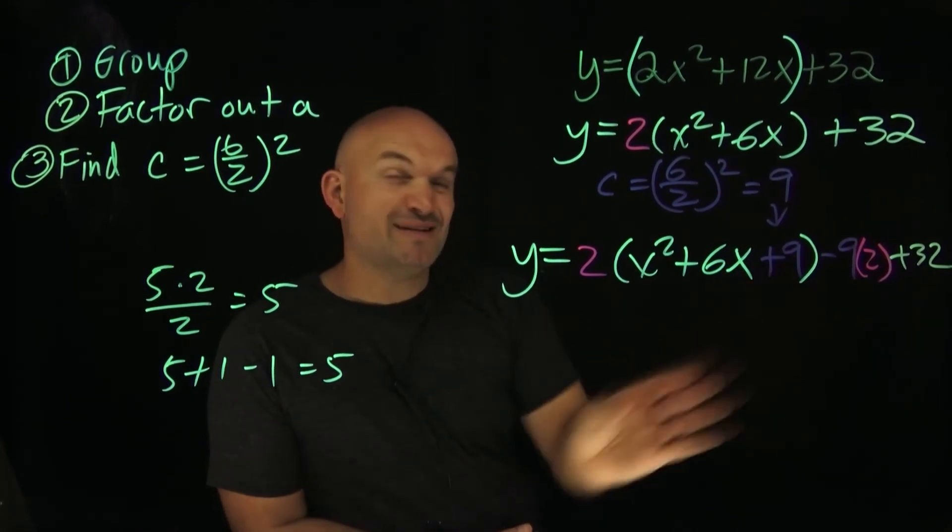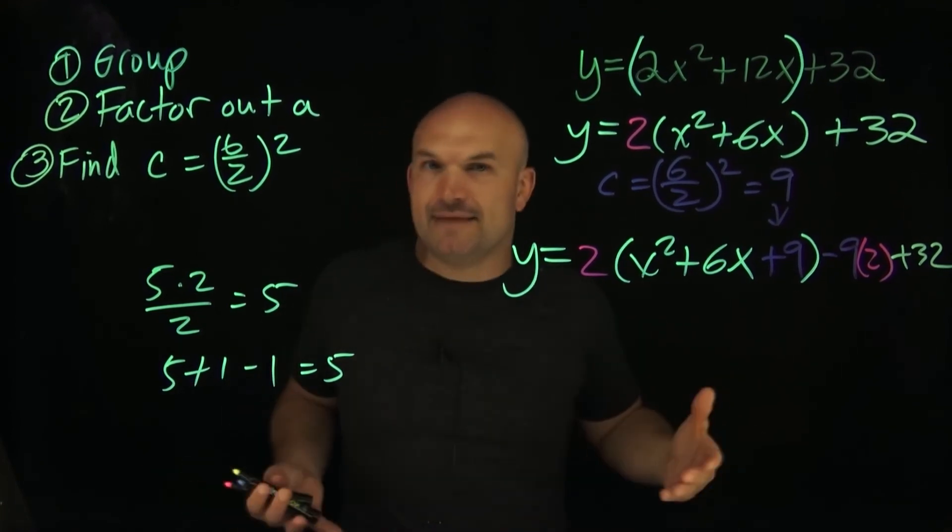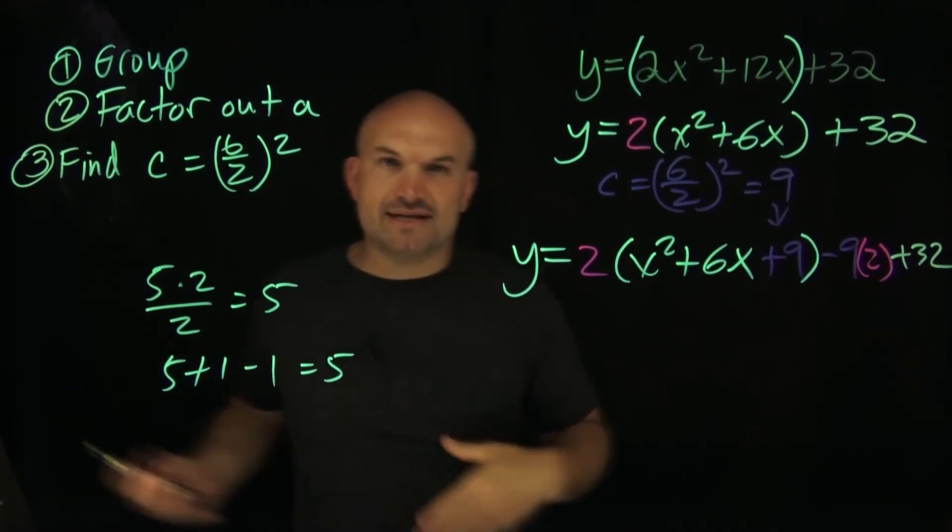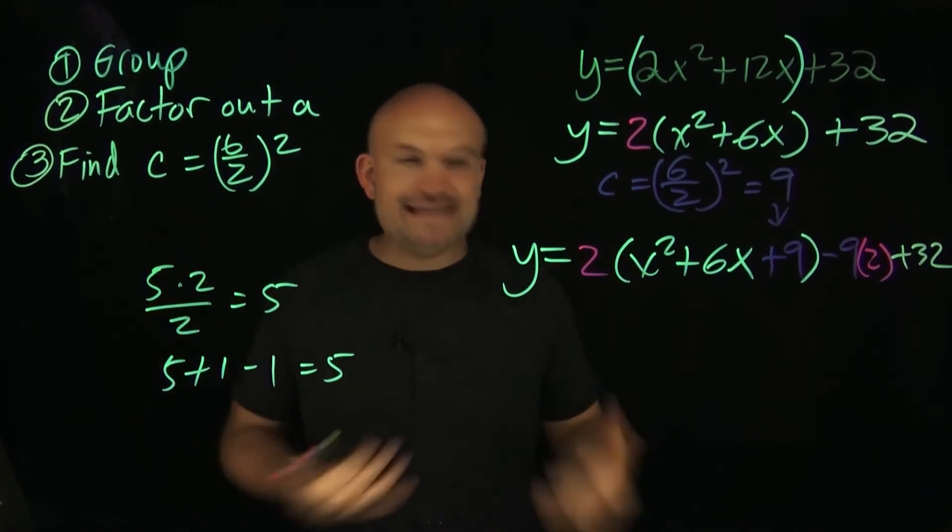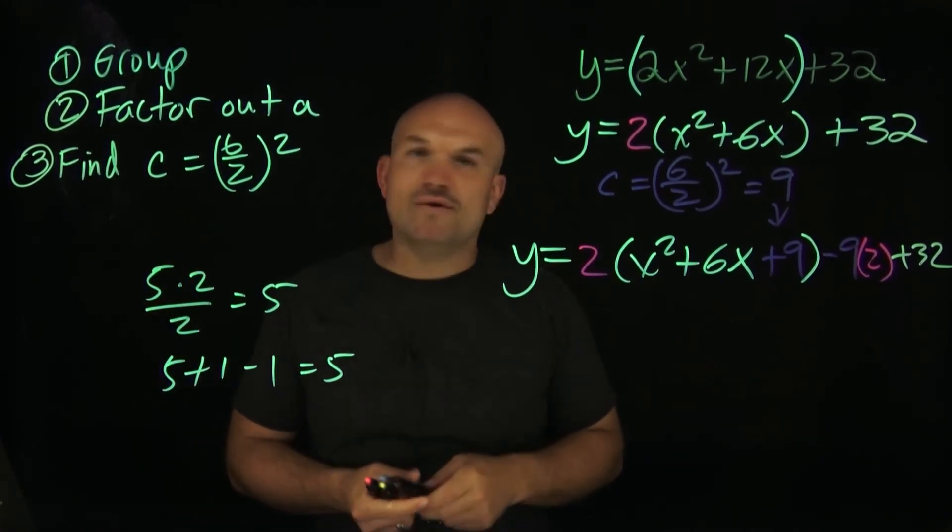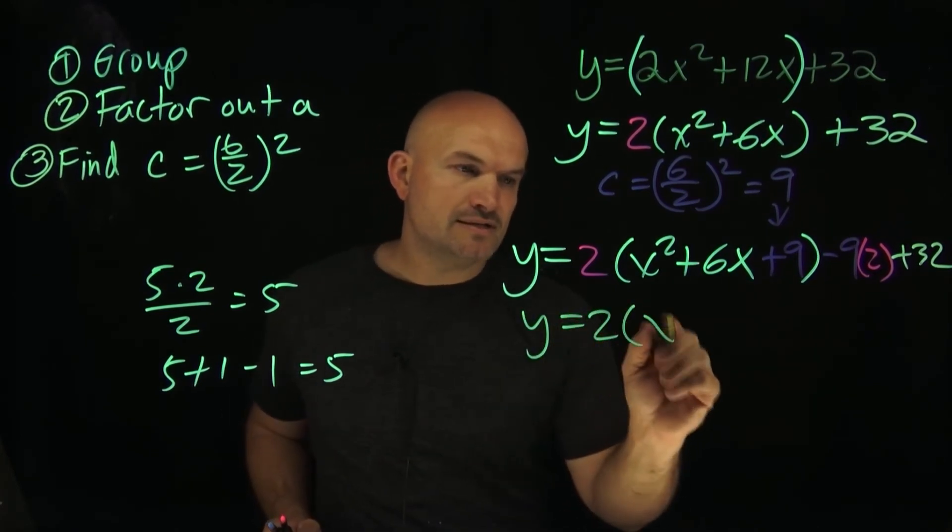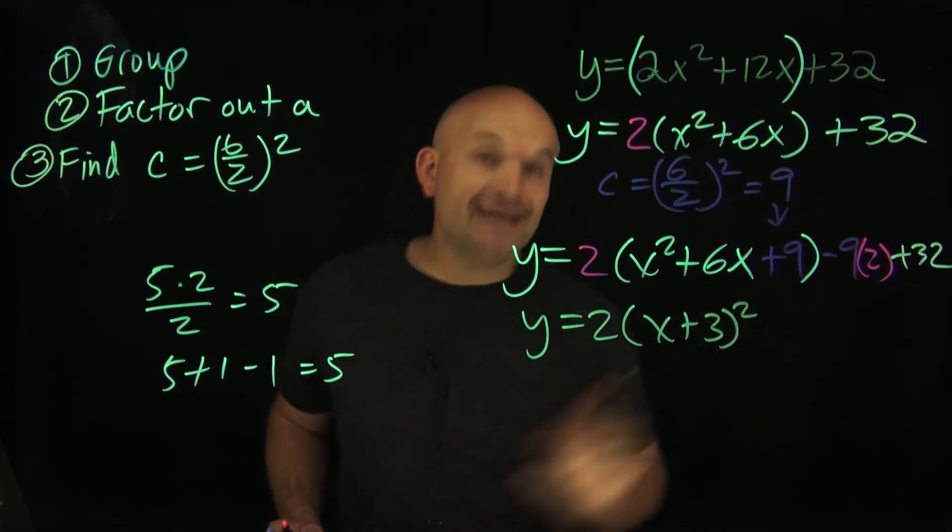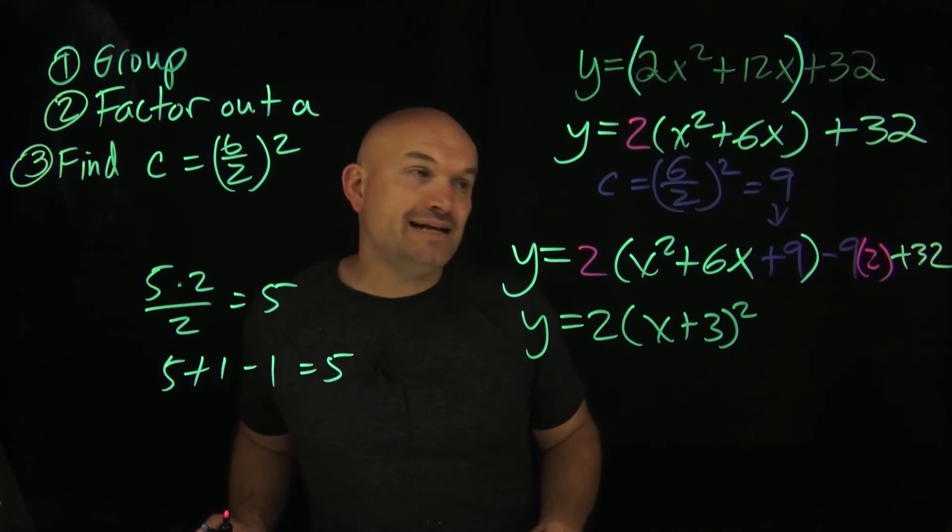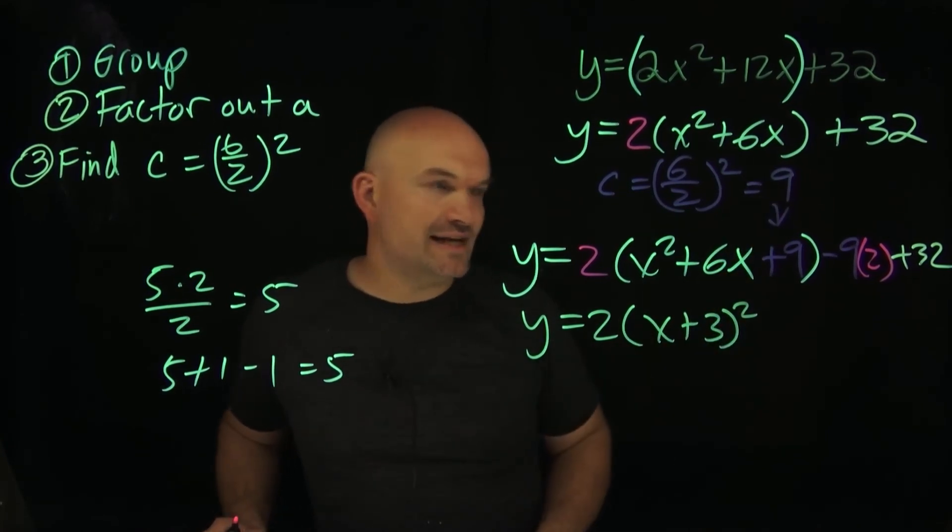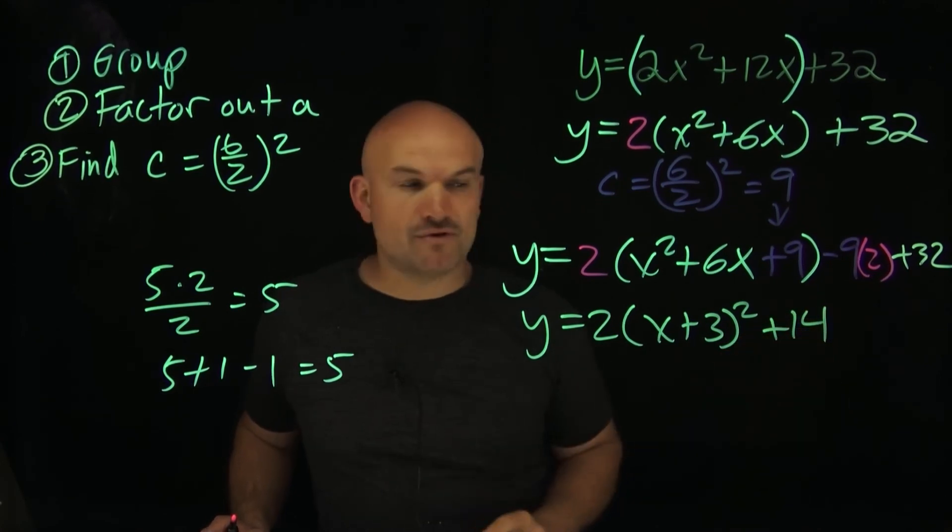Now we have x squared plus 6x plus 9. Remember that's our perfect square trinomial. What two numbers that are exactly the same are going to multiply to give you 9, add to give you 6? That's just going to be a 3. So now I have y equals 2 times x plus 3 quantity squared. Now I have 9 times 2, which is going to be negative 18. So 32 plus negative 18 is going to be 14, a positive 14.